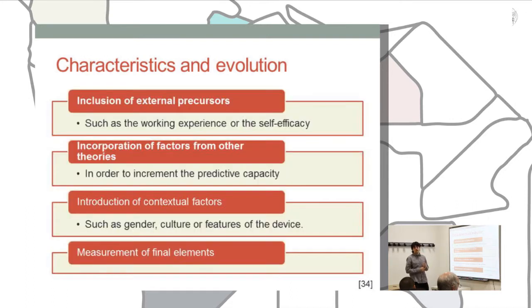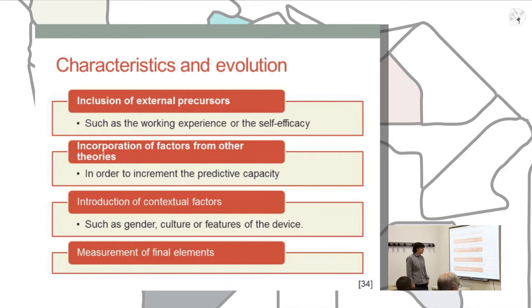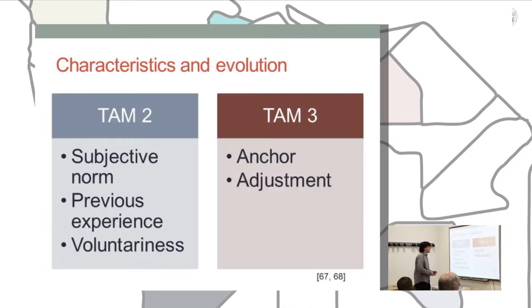In order to overcome these difficulties and increase the explained variance, the TAM model has been frequently modified by researchers. The most common modifications can be classified in several purposes: the inclusion of system precursors such as prior experience or training; the incorporation of factors from other theories to increase predictive capacity; and the introduction of contextual factors such as culture or device characteristics. There are also two extended versions: TAM-2, which added subjective norm, previous experience, and voluntariness to the scheme; and TAM-3, whose main innovation is the inclusion of anchor and adjustment factors that influence perceived ease of use.